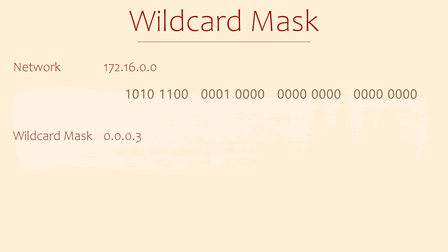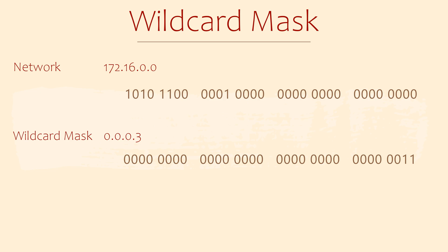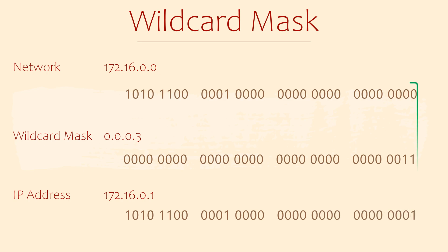The wildcard mask is like a subnet mask in many ways — it's a 32-bit number which we can show in binary or decimal, and it goes along with an IP address. Like a subnet mask, it shows parts of an IP address that we're interested in. When we look at it in binary, the zeros represent the parts of the address that we're interested in, and the ones are the bits we don't care about. When we use the mask to compare the network address and the IP address, we only care about the first 30 bits and don't care at all about the last two bits. The router knows to use OSPF on any interface with an IP that matches those bits.